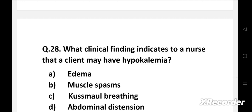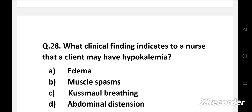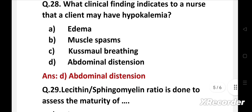Next question. What clinical finding indicates to a nurse that a client may have hypokalemia? Option A: edema, B: muscle spasms, C: Kussmaul breathing, D: abdominal distension. Hypokalemia diminishes the magnitude of the neuronal and muscle cell resting potentials. Abdominal distension results from flaccidity of intestinal and abdominal musculature.